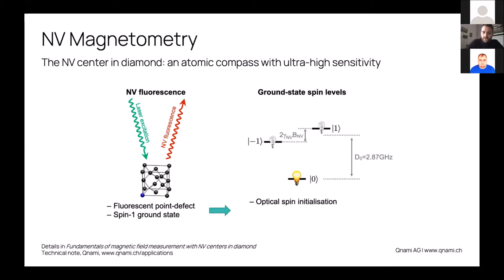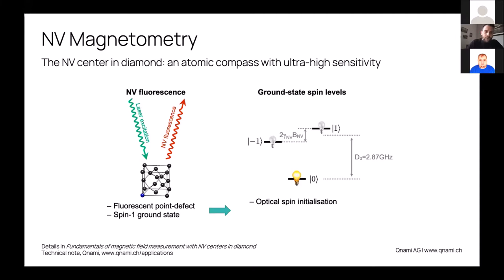When you're in the zero state, you get a lot of photons from your center, and when you're in minus or plus one you get a lot less. The last thing which is important to notice is how these energy levels are arranged. There is a fine structure splitting in the gigahertz range between the zero and one states, and these plus and minus one states further split when you apply a magnetic field—that's the very known Zeeman effect.